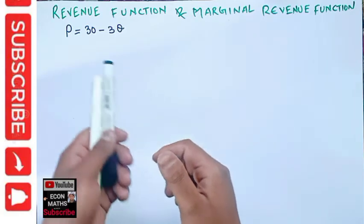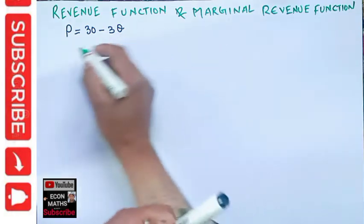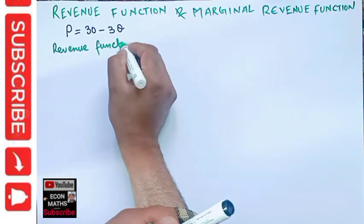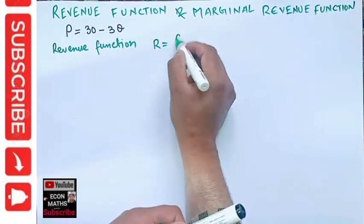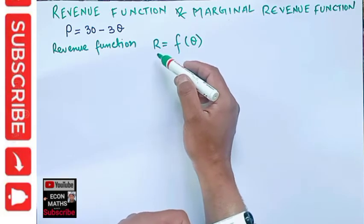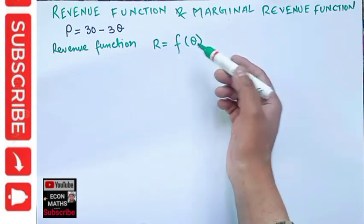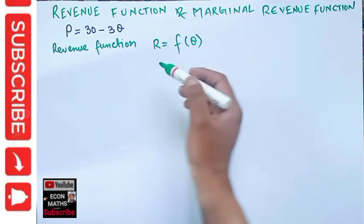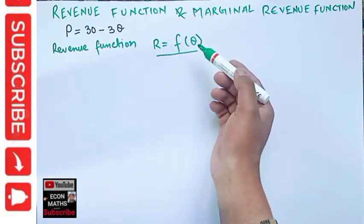Now from this demand function, how do we calculate the revenue function? The revenue function is given as a function of quantity — that is, how much revenue does a firm earn from the quantity of the product sold. The relationship between the quantity of product sold and the revenue generated is given by this revenue function. Revenue is the function of the quantity sold.